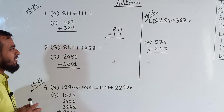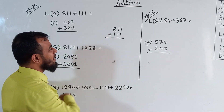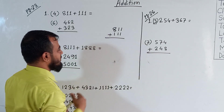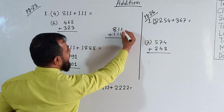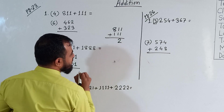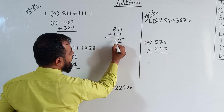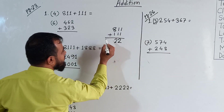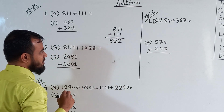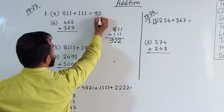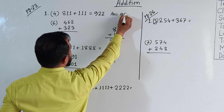We know that when we do addition, subtraction, or multiplication, we should start from the 1's place — that means from the right-hand side. In the right-hand side, we have 1 and 1. Add 1 with 1, it will make 2. So 2 in the 1's place. Then in the 10's place, 1 and 1 makes 2. Then the 100's place: 8 and 1 makes 9. So the answer is 922.